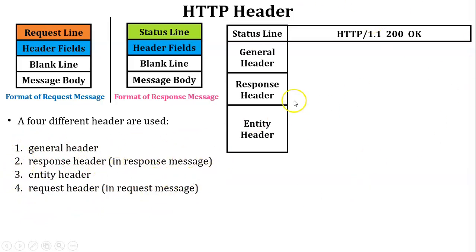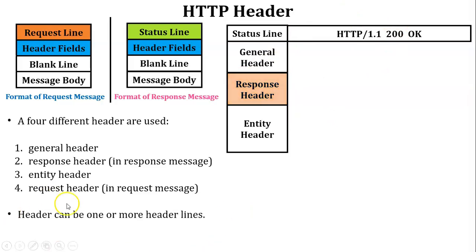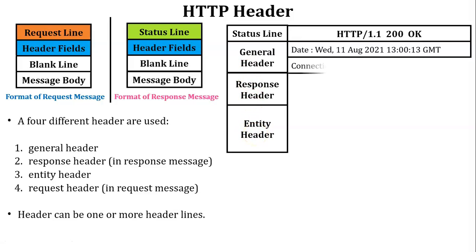This diagram shows the format of the response message because the response header is present in it. A header can contain one or more header lines. In the general header, there are two different lines: the first is the date, indicating when the response was created, and the second line indicates the TCP connection status — it is closed.